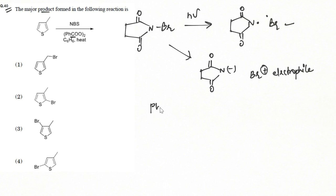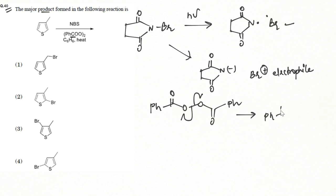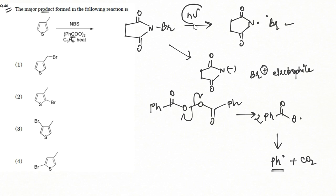Looking at the reaction conditions, we have benzoyl peroxide, which is a radical generator or radical initiator. It generates two carboxylate radicals, which further dissociate into phenyl radicals and carbon dioxide. Since radicals are generated in the medium, NBS can cleave homolytically even without light, producing the bromine radical.